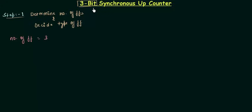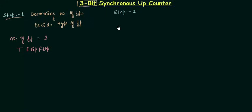I want to implement this three-bit synchronous up counter by using the T flip-flop. Step number one is done and now we move to step number two, which says we have to make the excitation table for the decided flip-flop. We have decided on the T flip-flop, so we make the excitation table for it.